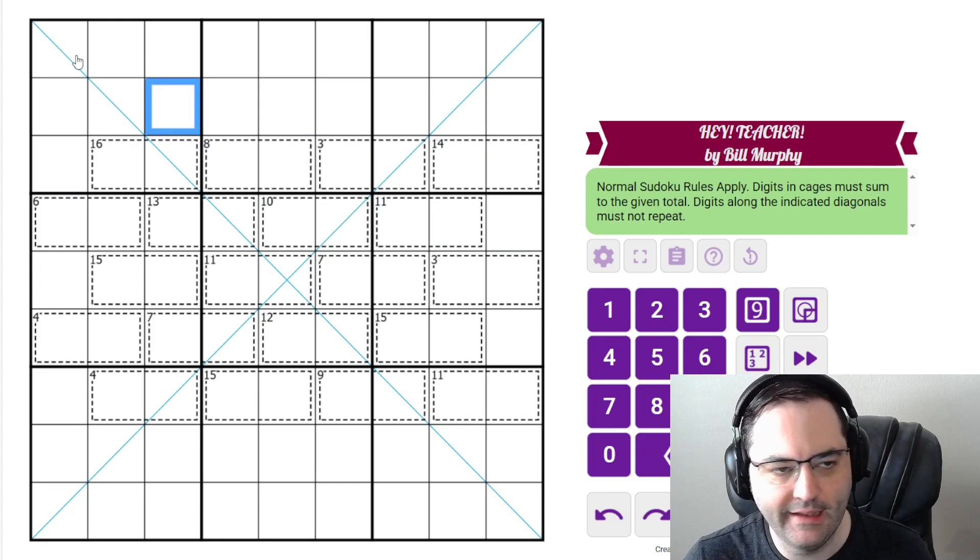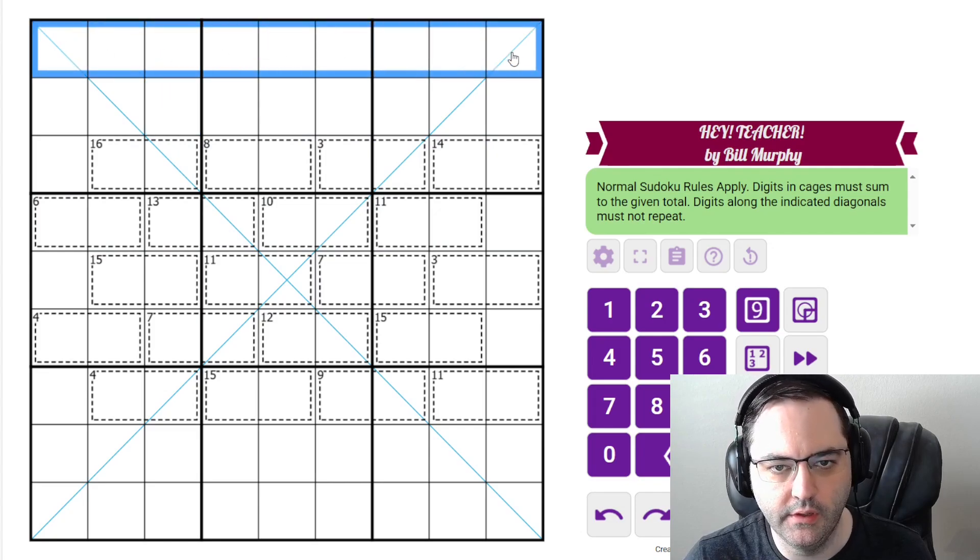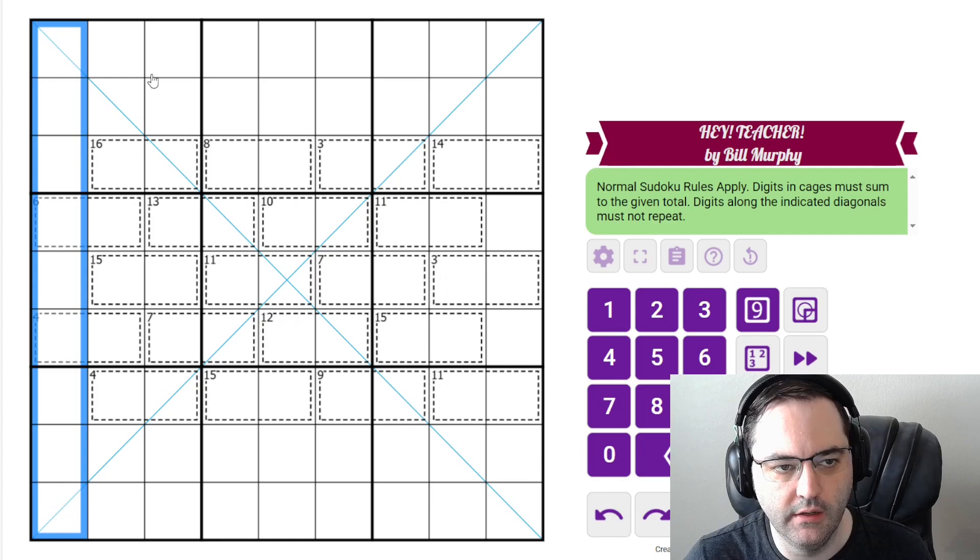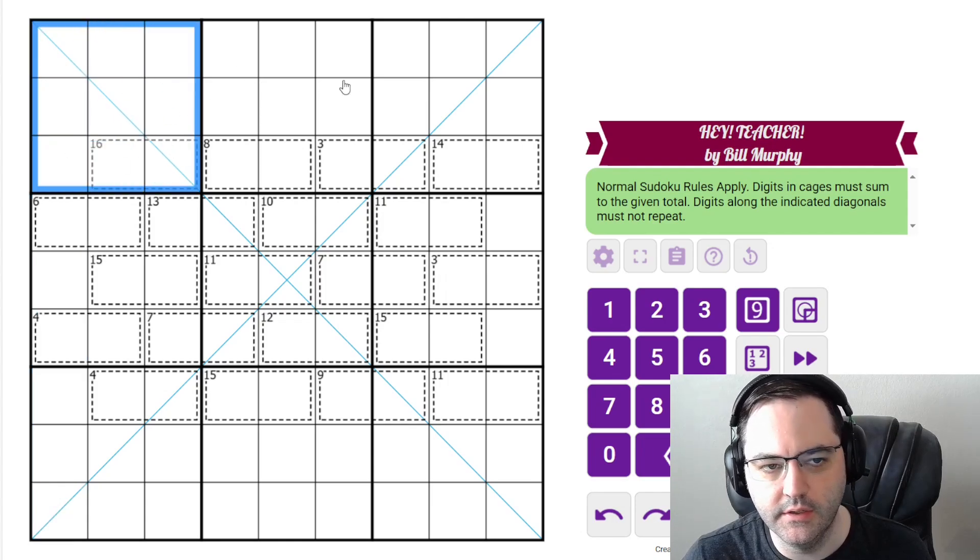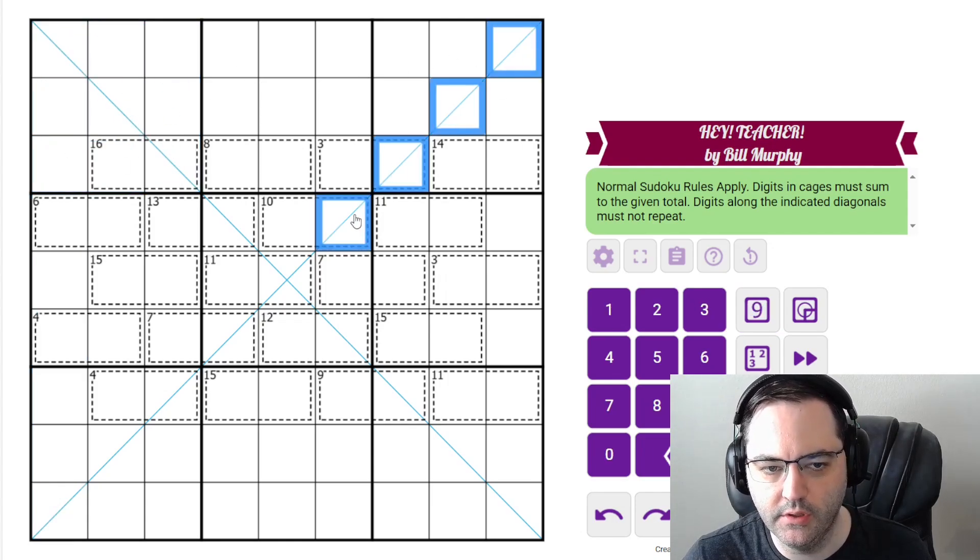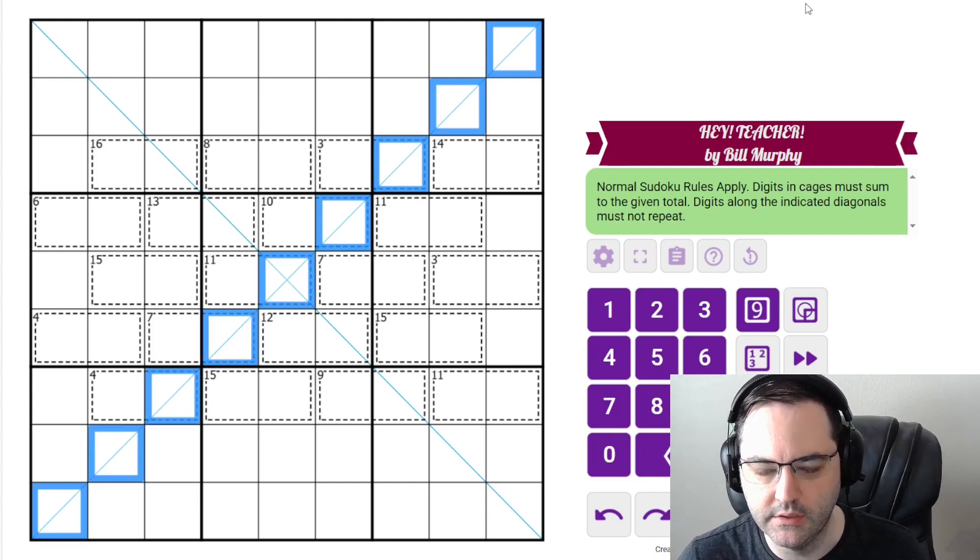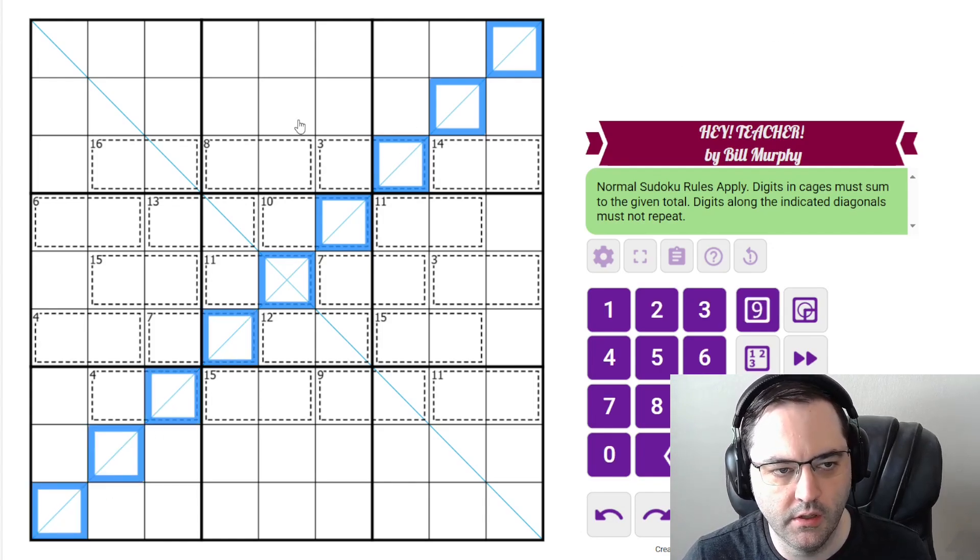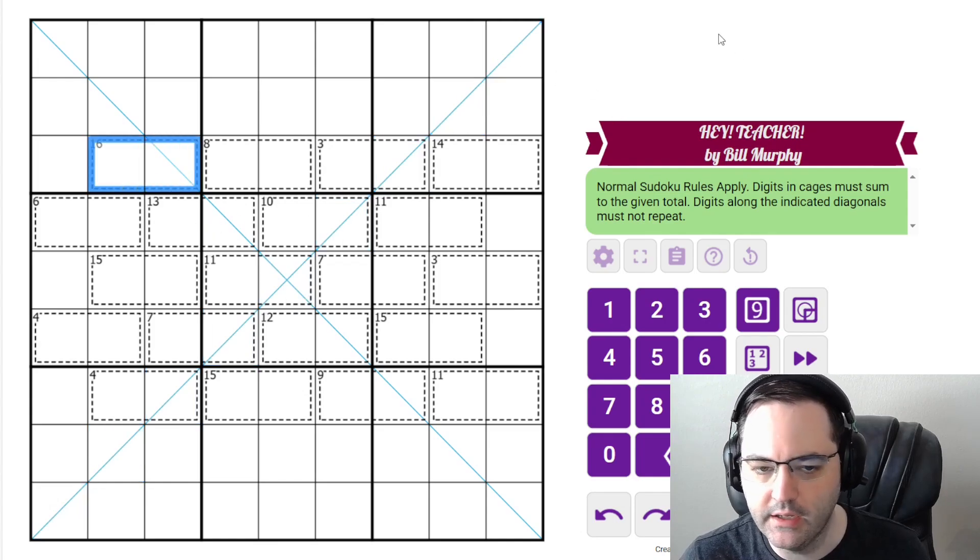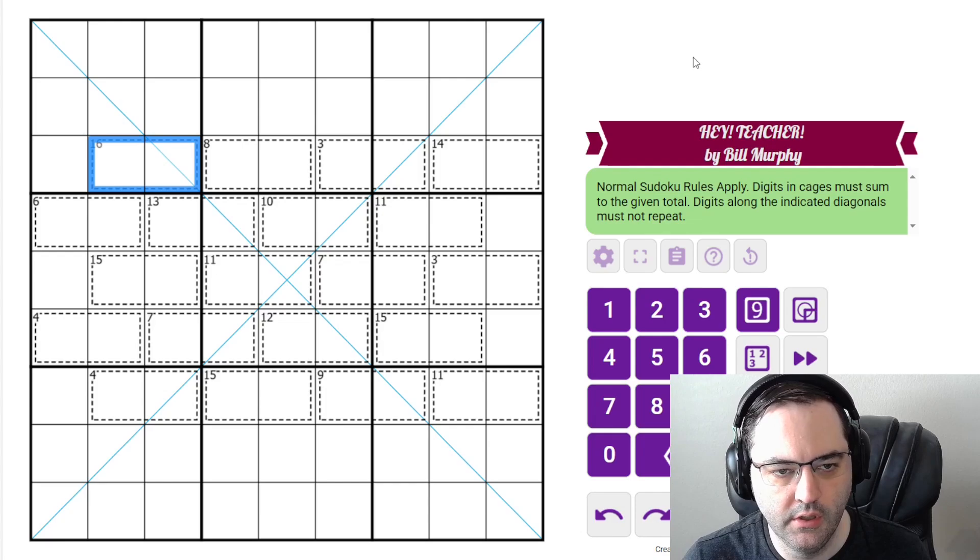We have a diagonal killer Sudoku today, 1 to 9 in each row, column, and 3 by 3 box. Additionally, we have these blue lines in the grid. We must also have the digits 1 to 9 on each of the diagonals, so no repeated digits. And then we have some cages in the grid. All of the cages in this puzzle are two cells, and they give the total in the top left corner, the sum of those two digits.